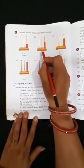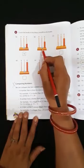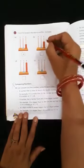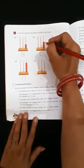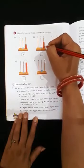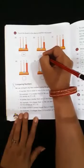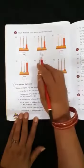In tens place how many beads? 1. So we will write here number 1. And ones place count. 1, 2, 3, 4, 5, 6. 6 ones. So we will write here 6. 16.